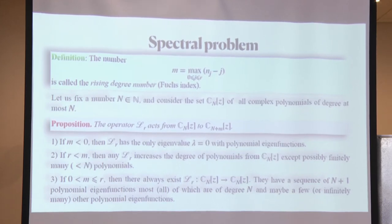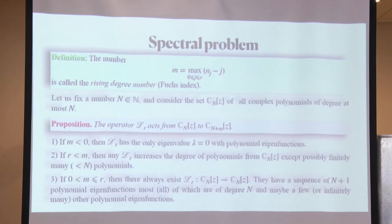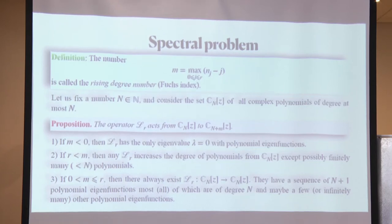We call it the rising degree number because the operator maps from CN to CN plus M in a generic situation — M can be negative, at least minus R, but it can be negative. If M is negative, then the polynomial has eigenvalue zero with polynomial eigenfunctions, but only eigenvalue zero. If M is greater than R, the order of the operator, then all operators always increase degree. They may still have polynomial eigenfunctions, but only finitely many.